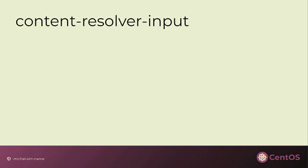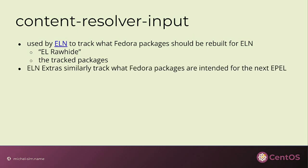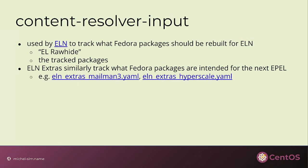There is this other thing called content resolver input that we've been using to keep track of packages. ELN uses it to declare which Fedora packages we care about in CentOS Stream — we want to build in ELN, which is like a rawhide for enterprise Linux, to make sure we can build the latest version against the CentOS configuration. ELN Extras is similar: these are the packages we care about in EPEL, and we want to make sure that when the new EPEL is released, the packages we want are buildable.